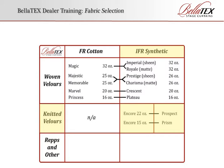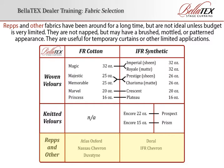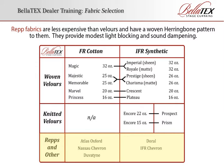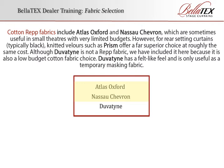Now we'll examine the last category: Reps and Other. Rep fabrics have been around for a long time but are not ideal unless budget is very limited. They are not napped but may have a brushed, mottled, or patterned appearance, and are useful for temporary curtains or other limited applications. Rep fabrics are less expensive than velours and have a woven herringbone pattern. They provide modest light blocking and sound dampening. Cotton rep fabrics include Atlas Oxford and Nassau Chevron, which are sometimes useful in small theaters with very limited budgets.